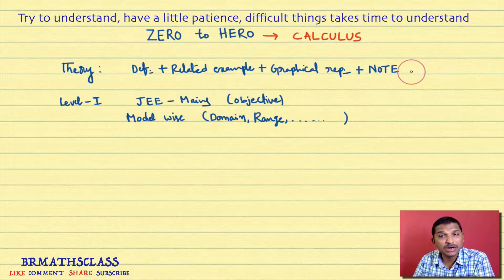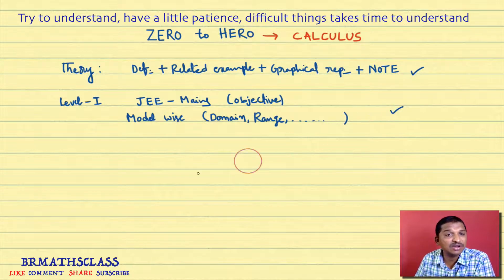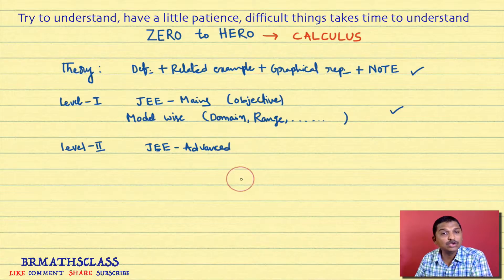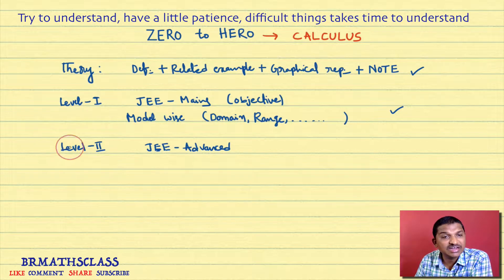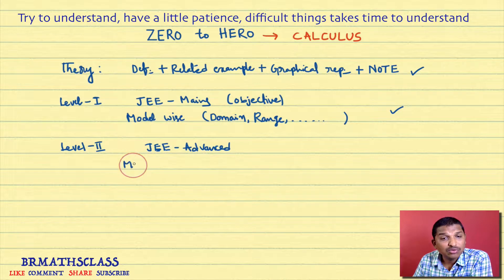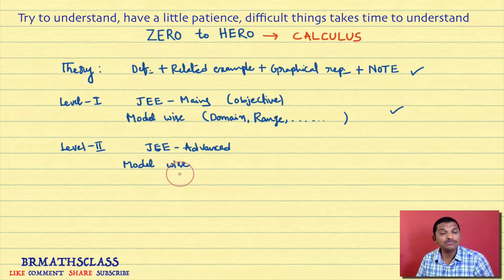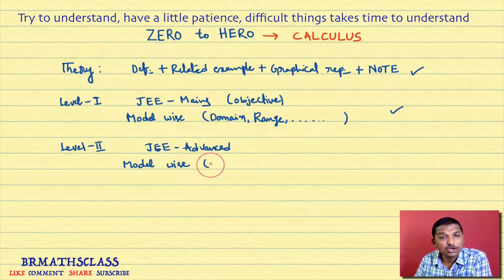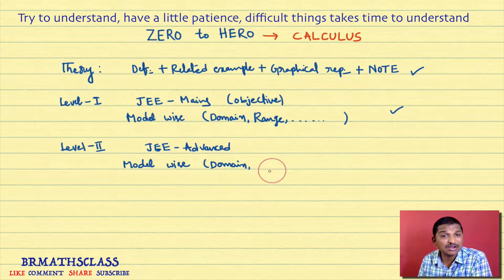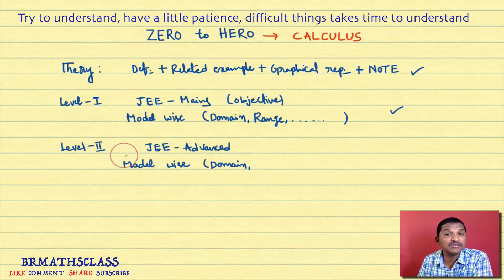Once you are good in part one, that is theory, once you are good in part two, that is Level 1, this Level 2 is about JEE Advanced. In this also we go with model wise. It is similar to Level 1 only, but the depth of the problems will be more. Model wise, the problems related to domain, a tougher one will be there in this Level 2.